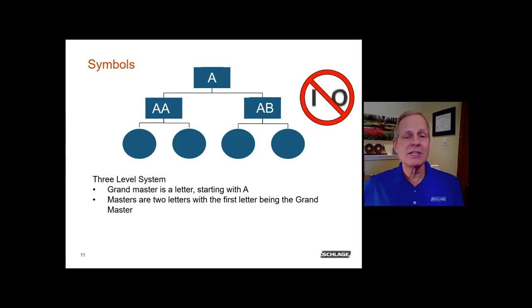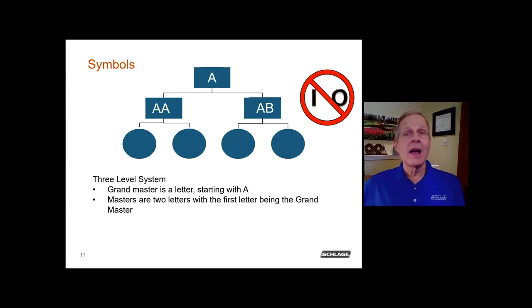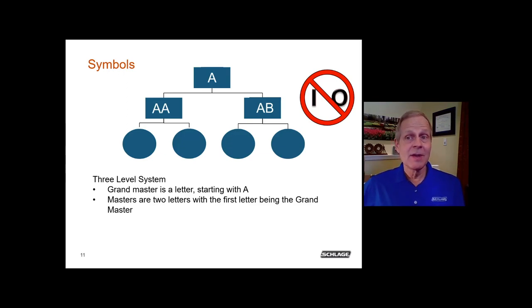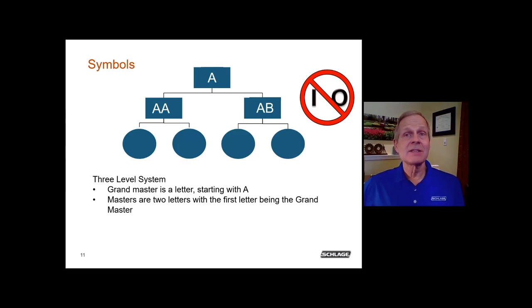When assigning master key letters, we avoid the letters I and O because they can be mistaken for numbers — I for one, and O for zero. This was especially important in the days when transmissions were frequently done by fax. So most manufacturers will avoid using I and O when labeling the master keys.